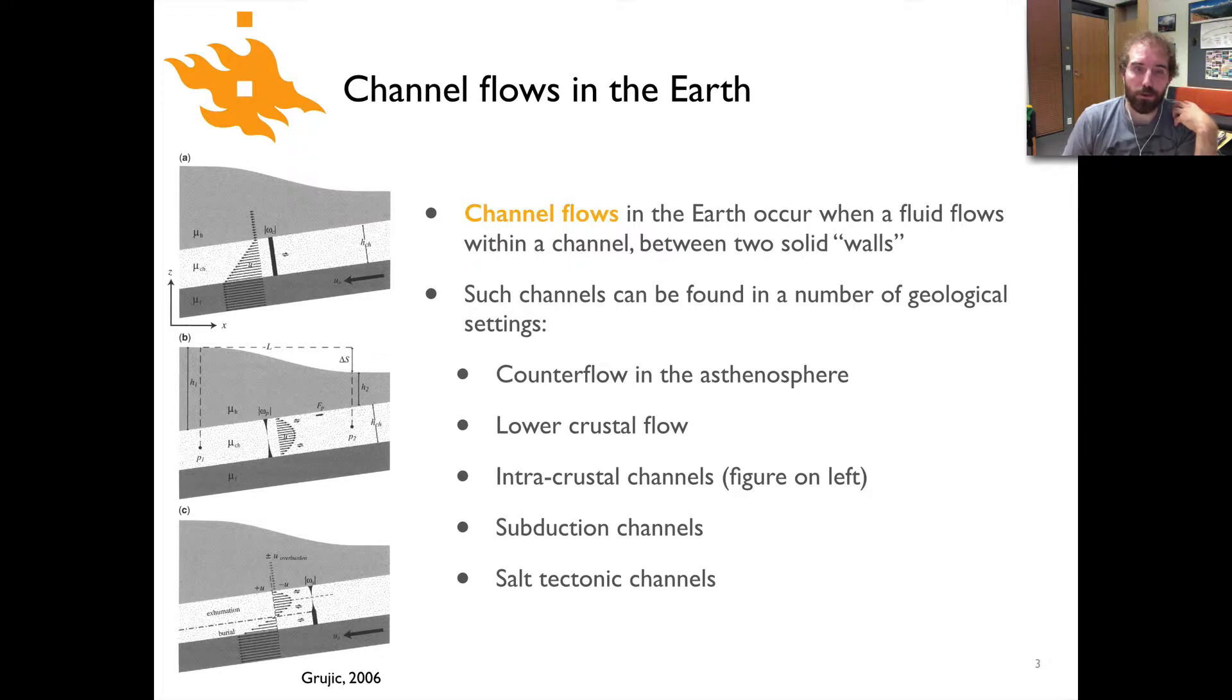There are intracrustal channels such as what's shown here on the figure on the left of some schematic mountain range with a subducting plate moving down beneath it. This stippled pattern area is meant to be some kind of channel that might be flowing down along with the subducting plate or flowing back in the other direction. Don't worry right now about the details of how this flow works. Simply just wanted to show you another example of the kind of channel flows.